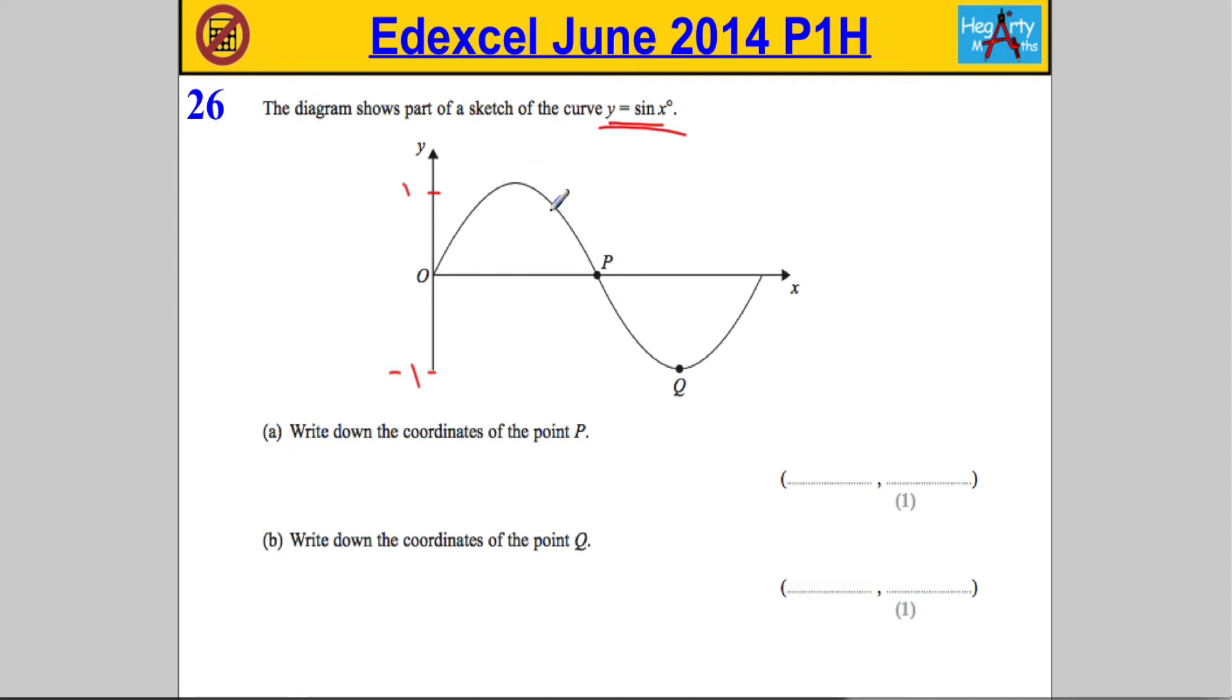They start to repeat when we get to this point here, and it repeats every 360 degrees. Now that should help us answer this problem. Hopefully you can see via the symmetry of the graph that P must be 180 degrees, so that's half a cycle, and Q is negative one.